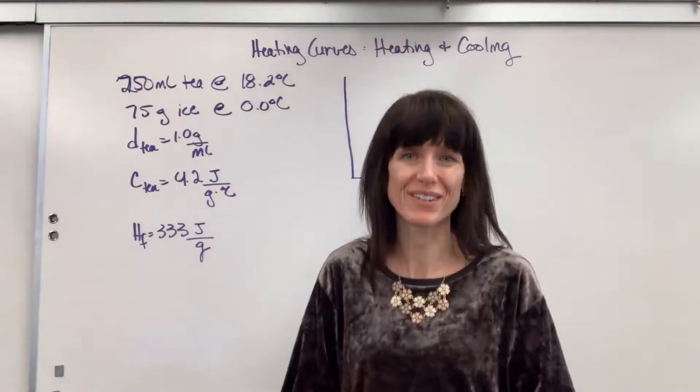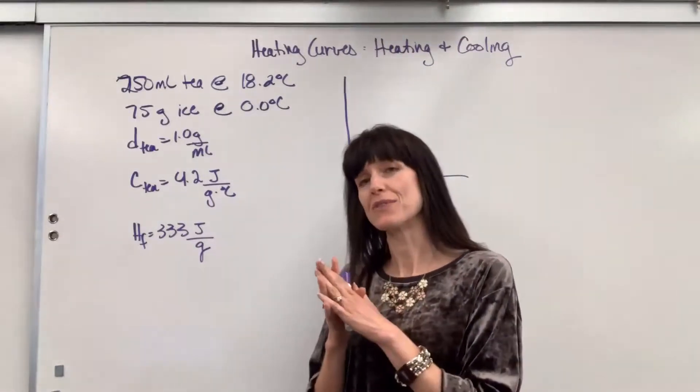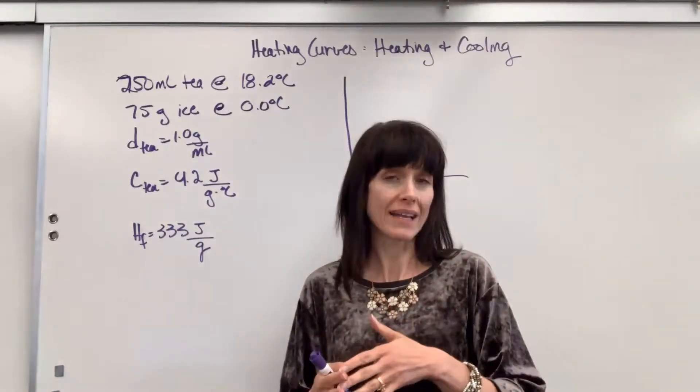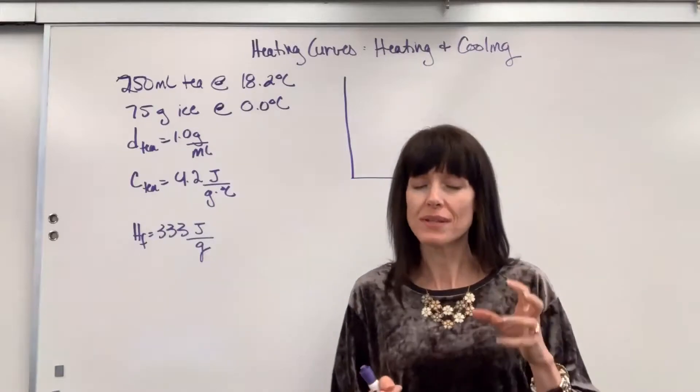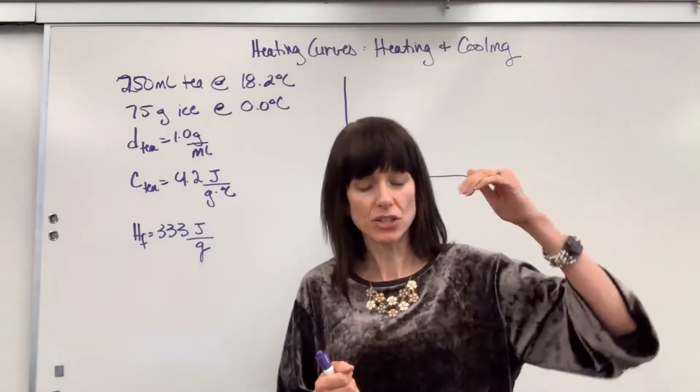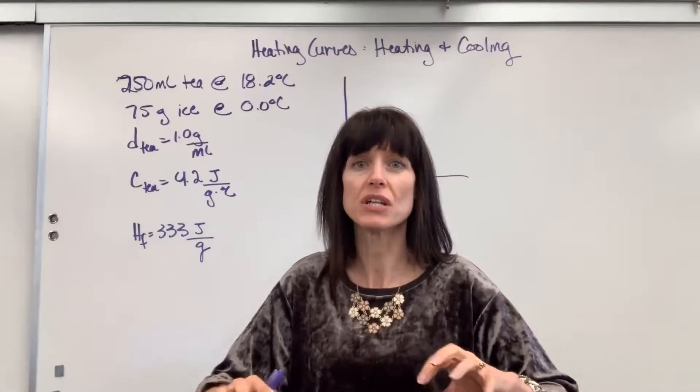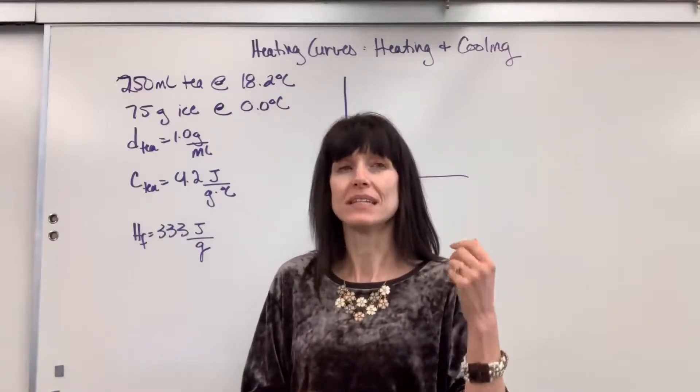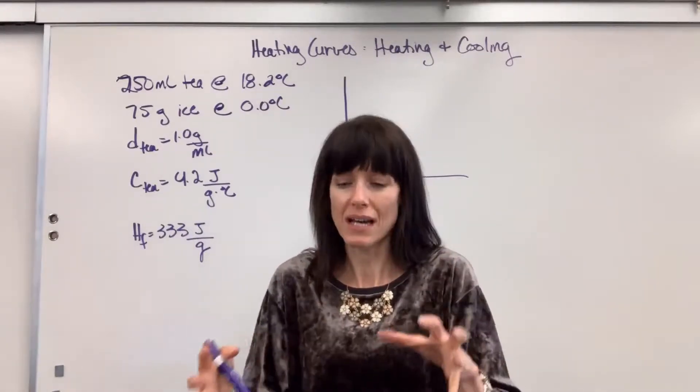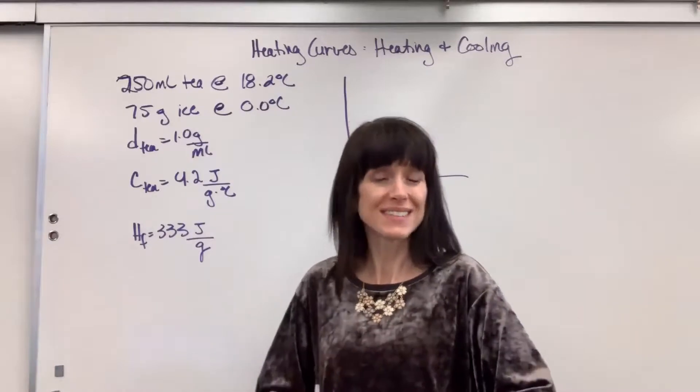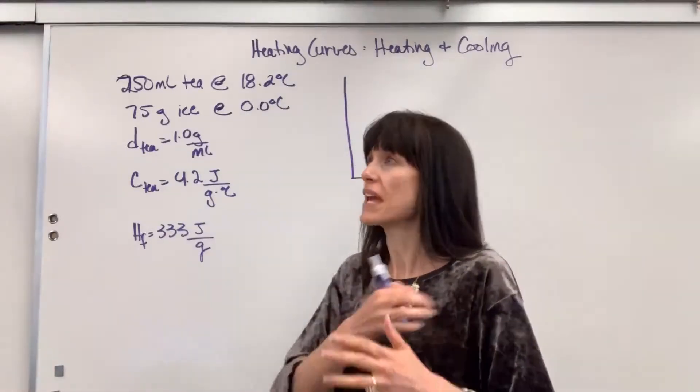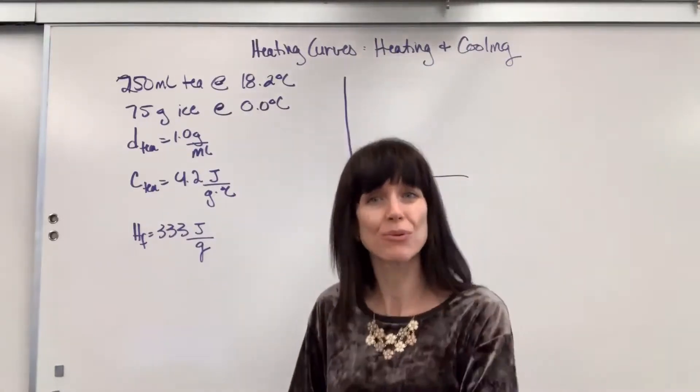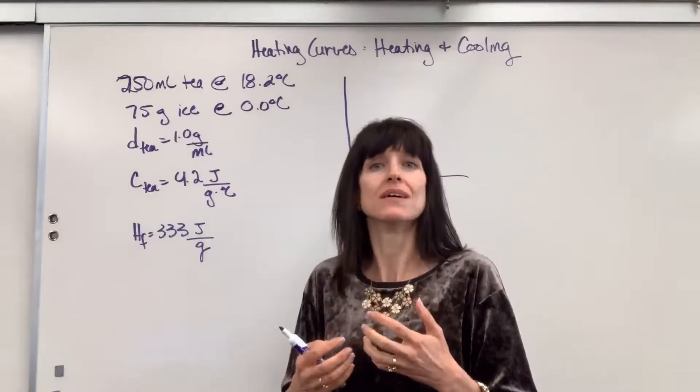So you're thinking transfer of energy. Remember energy always flows from hot to cold. So the energy from the tea is going to go into that ice because that's the low energy. The tea is releasing its energy, the ice absorbs that energy and it's going to melt. The tea is going to give away exothermic, the ice is going to absorb endothermic. Remember conservation of energy, we can't create or destroy energy. The amount of energy lost or released exothermic equals the amount of energy gained, absorbed, endothermic.